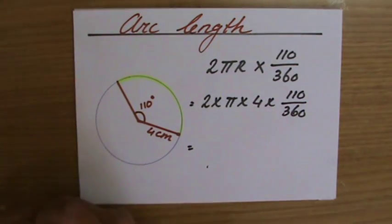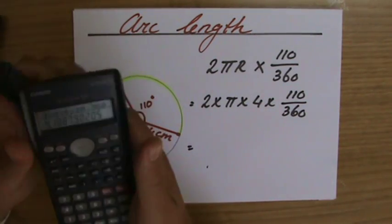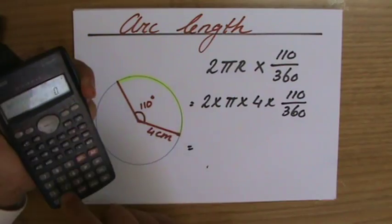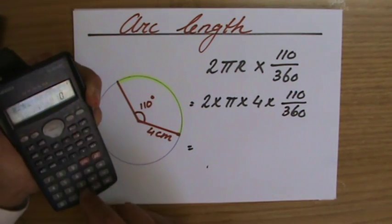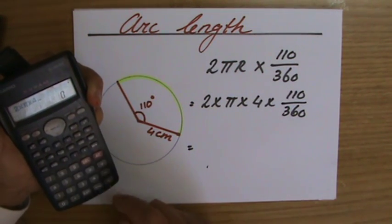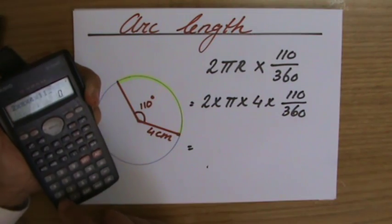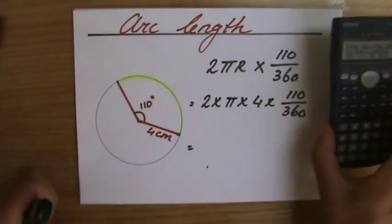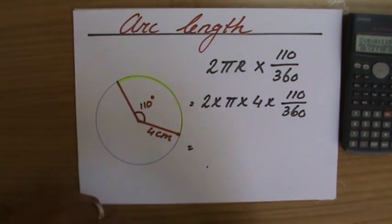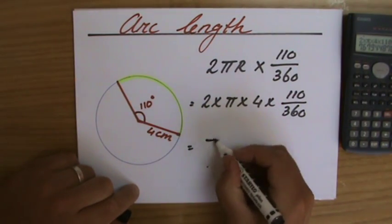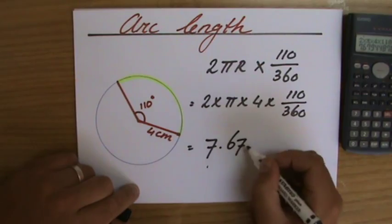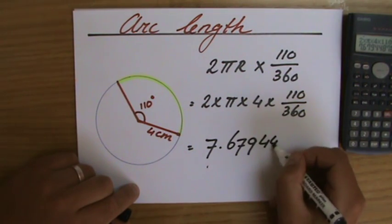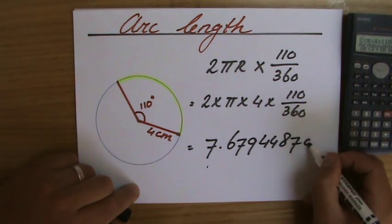Now I can take my calculator, just put my pen down for a sec. How do we go? Two times pi times four times 110 over 360 equals. Put my calculator down, I take my pen again, and it's going to tell me 7.67948709.